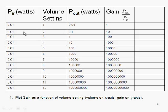Volume setting one, the gain is one, so the input power and the output power are equal to each other. I step the volume setting up by one, and that actually increases the gain to 10. My ratio of output power to input power is 10. Every time I step up the volume setting, I'm actually increasing the gain by a factor of 10.